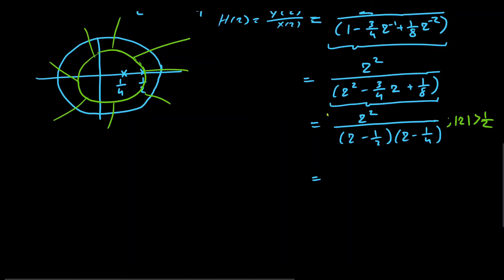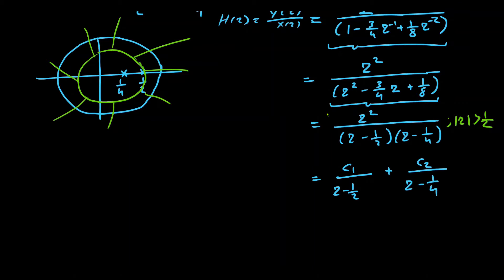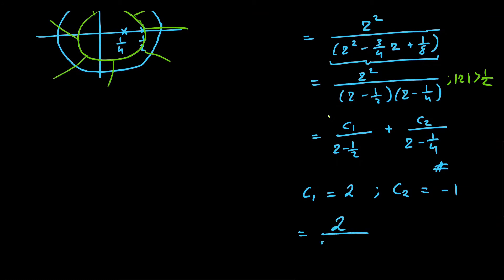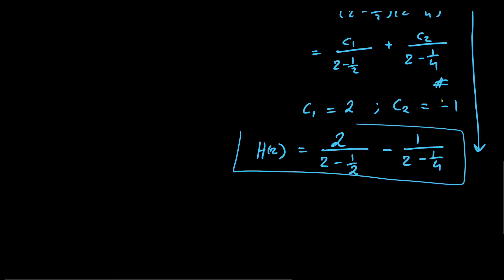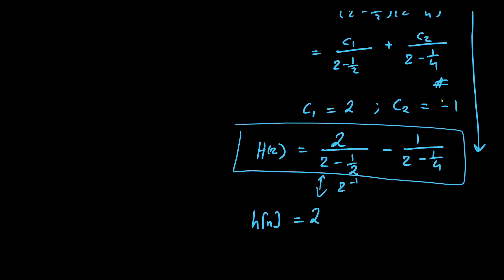Next we perform partial fraction expansion: H(z)/z = c1/(z minus 1/2) plus c2/(z minus 1/4). Solving, c1 = 2 and c2 = -1. So H(z) = 2z/(z minus 1/2) minus z/(z minus 1/4). Taking the inverse Z-transform, the impulse response is h[n] = 2·(1/2)ⁿ u[n] minus (1/4)ⁿ u[n].